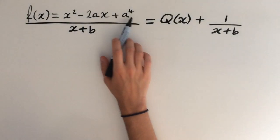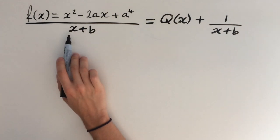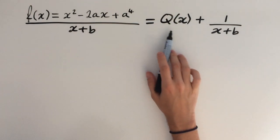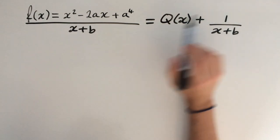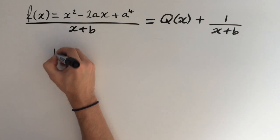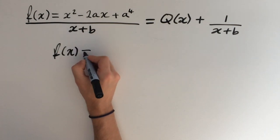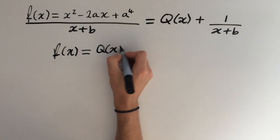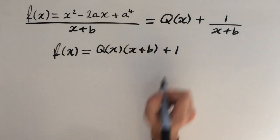From the question, we are told that this polynomial, I've called f of x, when divided by x plus b, we get a polynomial called q of x — but we're not interested in this — and we get remainder 1. So now let's multiply both sides by x plus b. On the left-hand side, we're going to get f of x, and on the right-hand side, we get q of x times x plus b, plus 1.